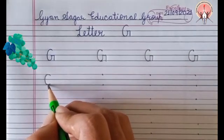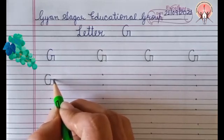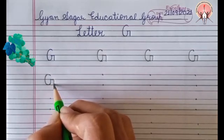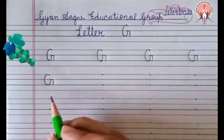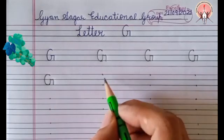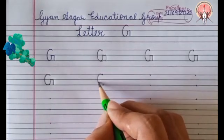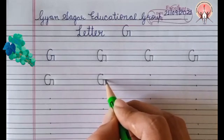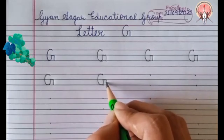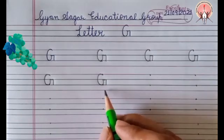Big curve. Go to the middle. Sleeping line. Then standing line. G. G for grapes. G for grapes.